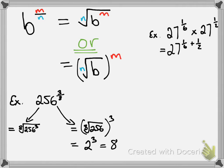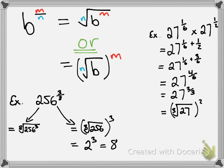So we're going to have 27 to the power of 1 sixth plus 1 half. Since they're both fractions, we need a common denominator of 6, giving us 27 to the power of 1 sixth plus 3 sixths, which equals 27 to the power of 4 over 6. Notice that 4 over 6 is reducible, so we reduce to 27 to the power of 2 over 3. Now I can make use of the exponent law and rewrite this as the third root of 27, all to the power of 2. The third root of 27 is just 3, so we get 3 squared, and our final answer is 9.